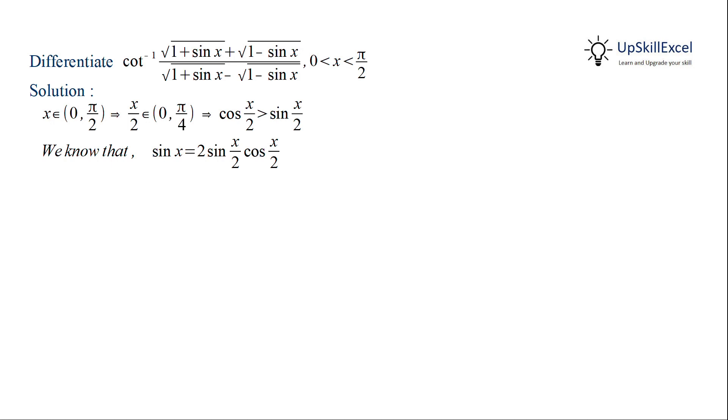We know that sin x can be written as 2 sin x by 2 cos x by 2. Similarly, 1 can be written as sin square x by 2 plus cos square x by 2.